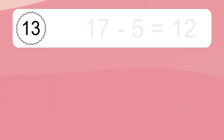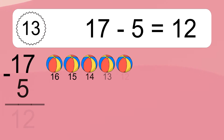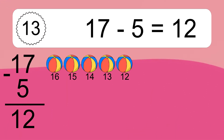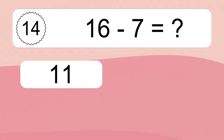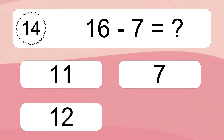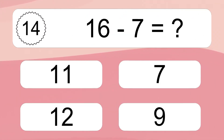17 minus 5 equals 12. Let's count it: 16, 15, 14, 13, 12. 16 minus 7 equals what?